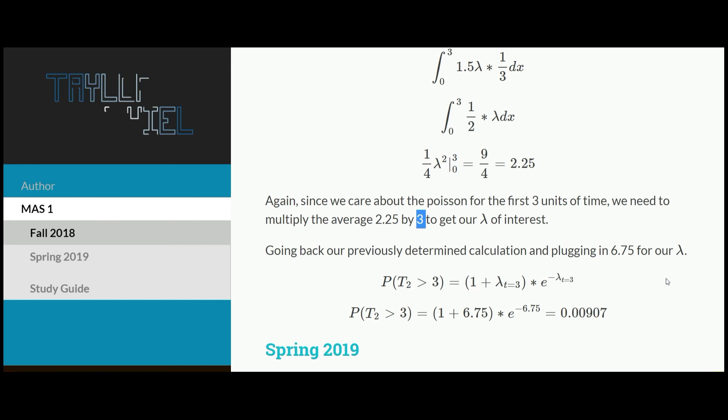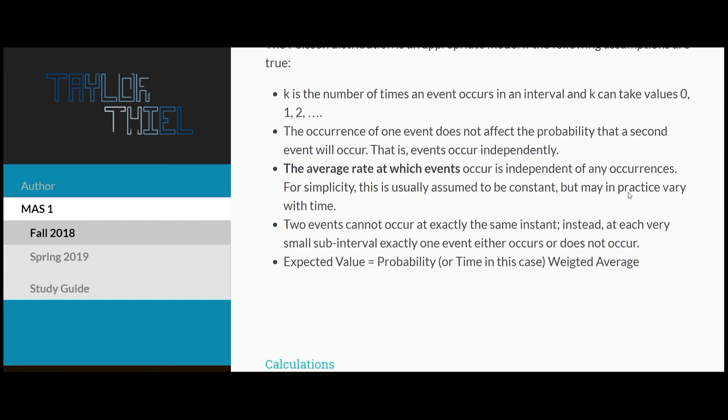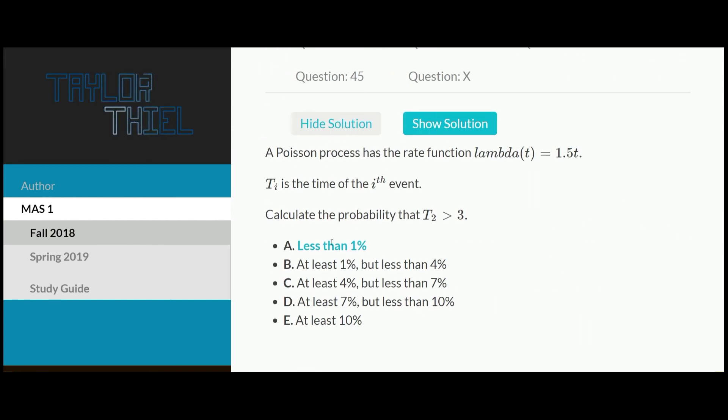Doing that, we just reference back to what we prepped earlier, and plug and chug. So 1 plus 6.75 times e to the negative 6.75 equals 0.009. Scrolling up, we see that that answer corresponds to a. So that's our final solution.